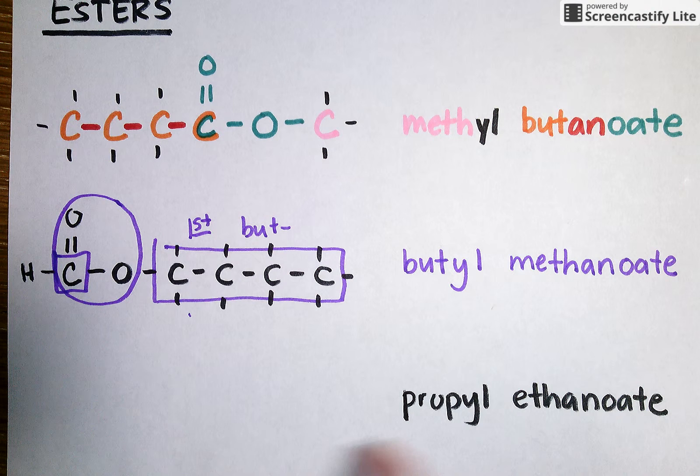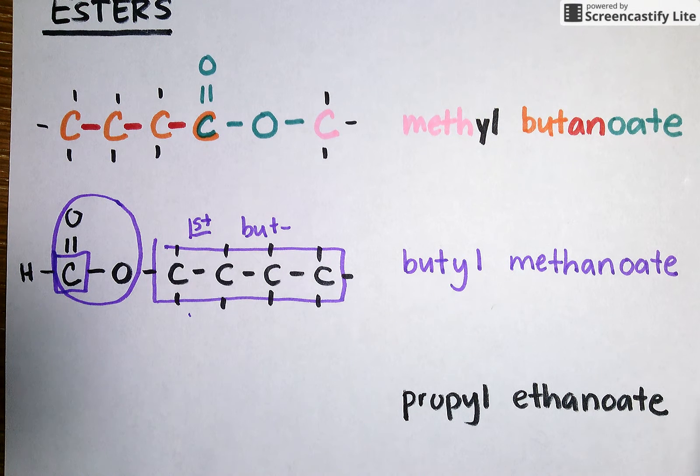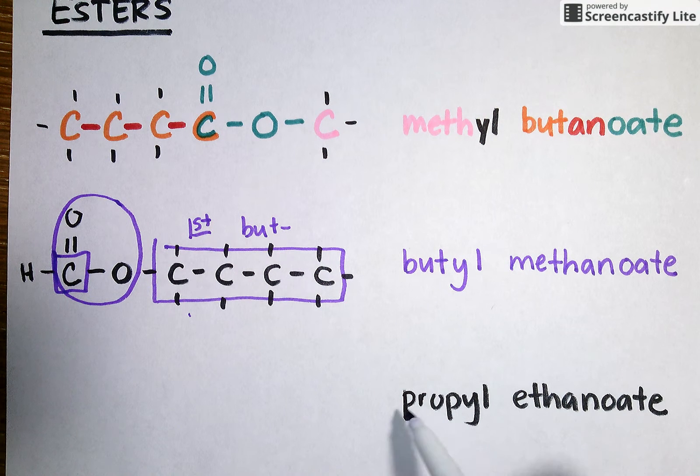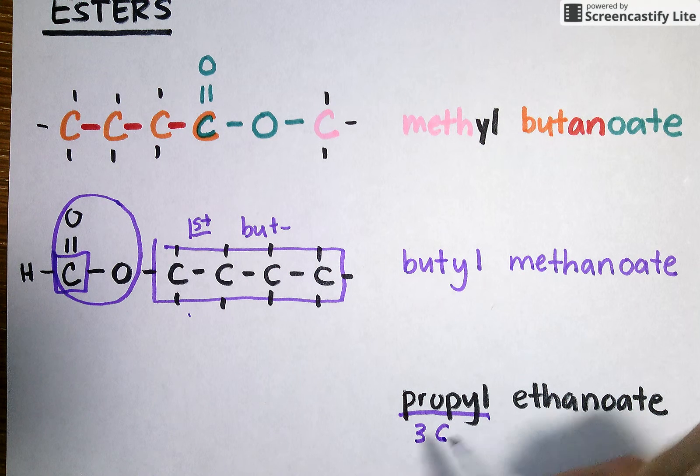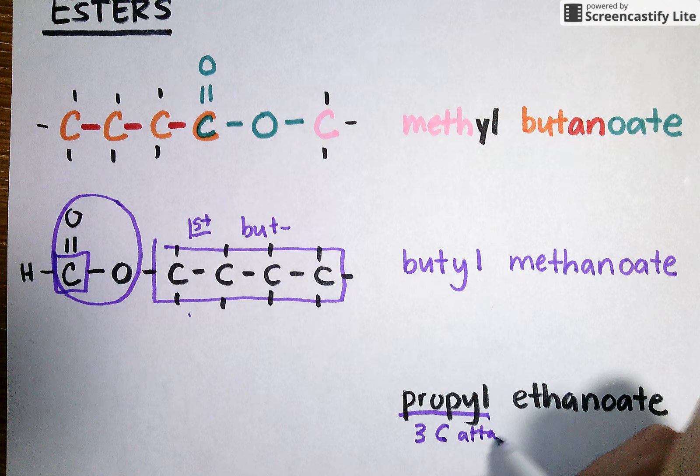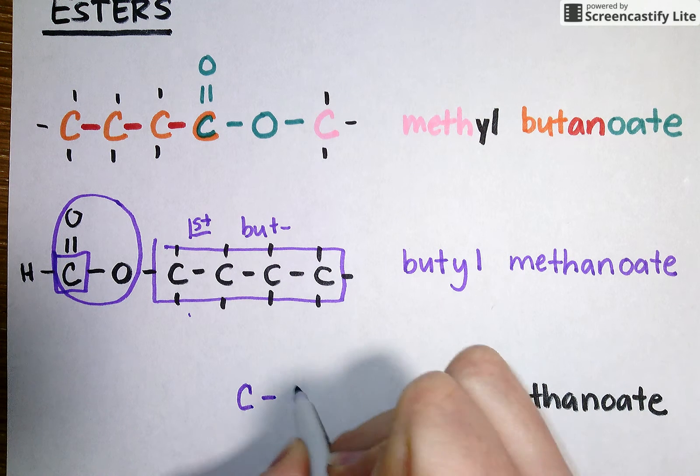Let's use that logic to break down propyl ethanoate. I'm going to highlight the fact that I see propyl first, and I'm going to draw my three-carbon attachment right over here. One, two, three.